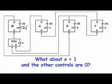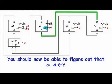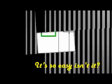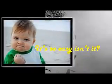What about if O is equal to 1 and the other controls are 0? You should now be able to figure out that O, Y will be copied to A. It is so easy, isn't it?